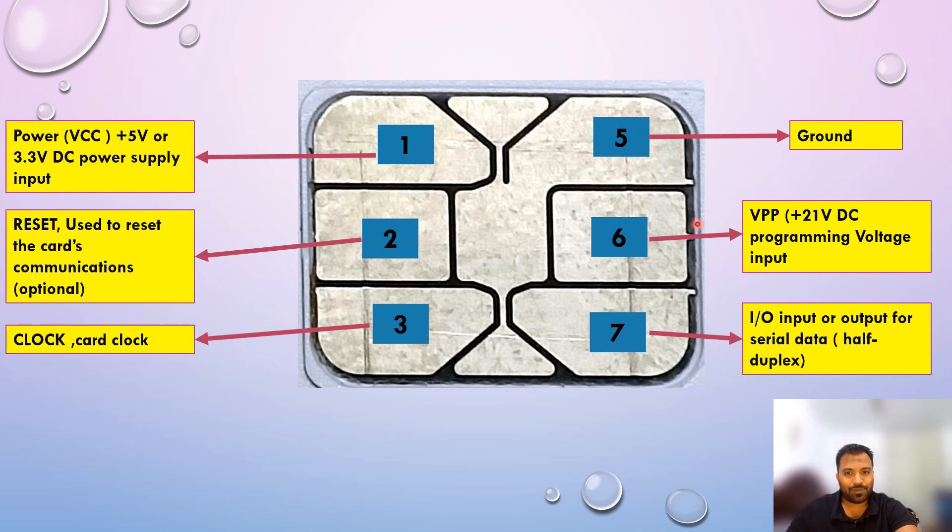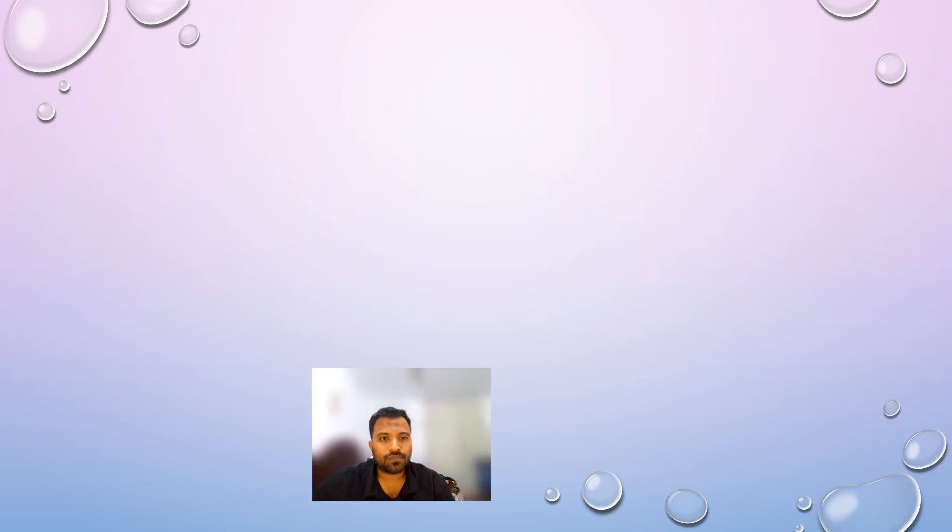So this is how the SIM card is represented. Next time when you see the SIM card, these data will be represented in your mind. So there is two types of patterns of the SIM cards. Now let's see those two types of patterns.